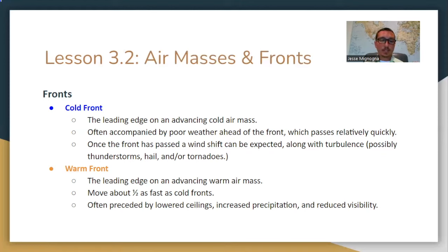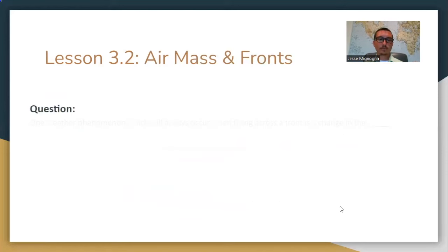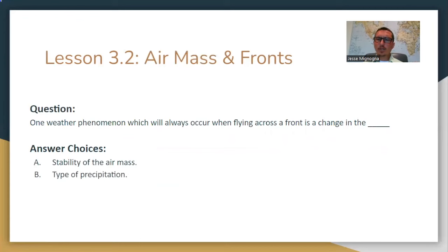I would take two flashcards: write 'cold front' on one and these bullet points on the back, and 'warm front' on another. Warm fronts are often preceded by lower ceilings, increased precipitation, and reduced visibility. Know that with a warm front, you're getting reduced visibility. Let me know in the comments if you like this format of learning a little, then getting a question — it's different from giving you all the information and then doing a separate question video.